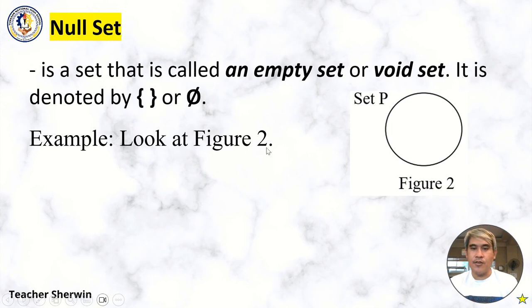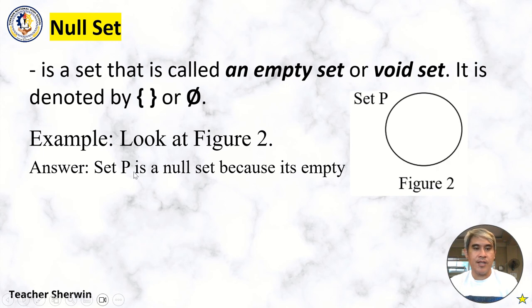Example: Look at Figure 2, Set P. Answer: Set P is a null set because it is empty. There is no element inside Set P.